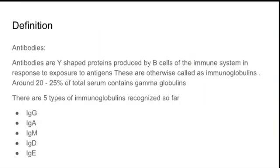An antibody is a Y-shaped protein produced by B cells of the immune system in response to exposure to antigens. Antibodies are otherwise called immunoglobulins. Our blood serum has 20 to 25 percent gamma globulins circulating in the body. There are five types of immunoglobulins recognized so far: IgG, IgA, IgM, IgD, and IgE.